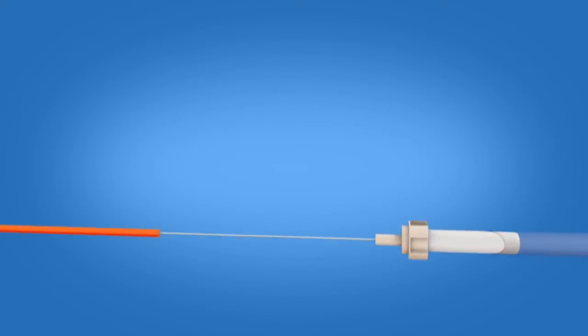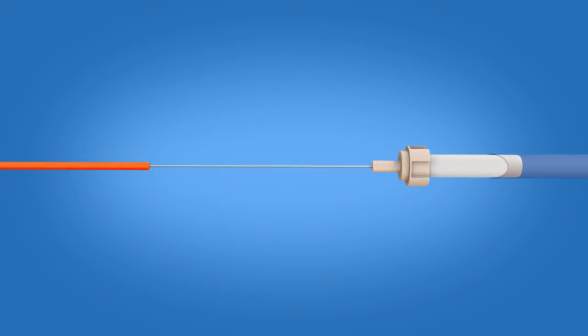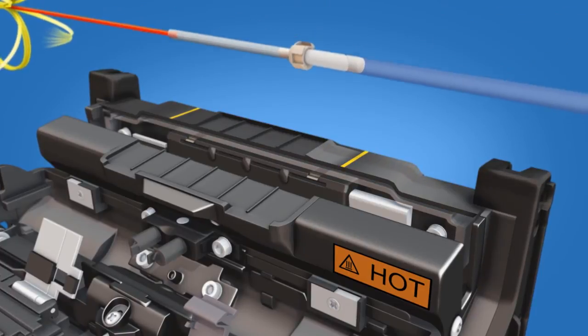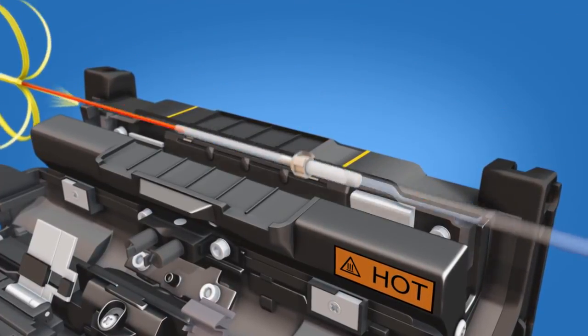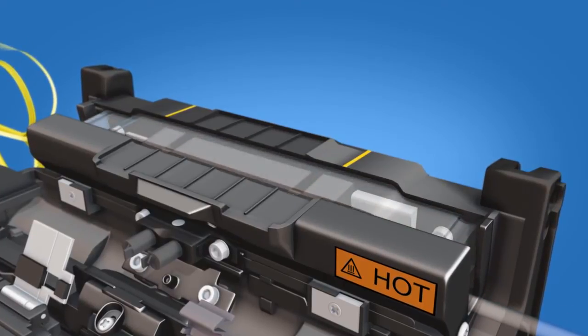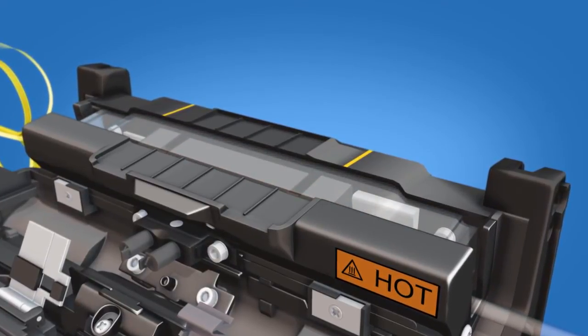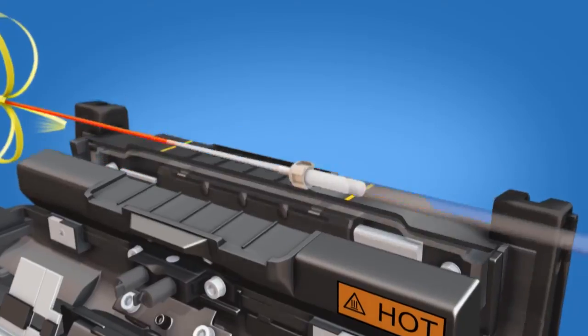Continue to keep tension on the splice while removing it from the fusion splicer. Slide the protective sleeve over the splice so that it is flush with the ferrule unit. Position the sleeve in the center of the heater while continuing to maintain contact with the ferrule. Heat the protective sleeve. Allow the sleeve to cool before removing it from the heater.